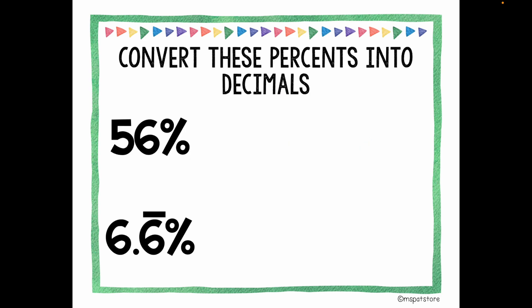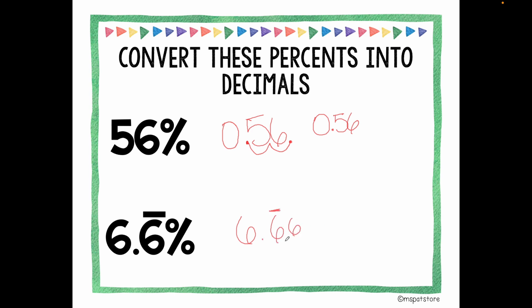Now pause the video and try to convert these percents into decimals, following the two steps we discussed. Let's look at 56%: I remove the percent symbol, the invisible decimal point is at the end, and I shift it two spaces to the left — one and two — with an invisible zero, giving 0.56. For the repeating decimal 6.6̄%, I shift my decimal point two spaces to the left: one and two. Filling in invisible zeros gives 0.066̄, with bar notation — meaning the six repeats.